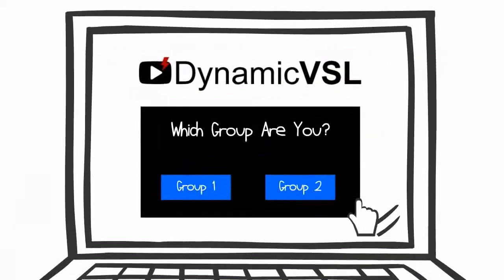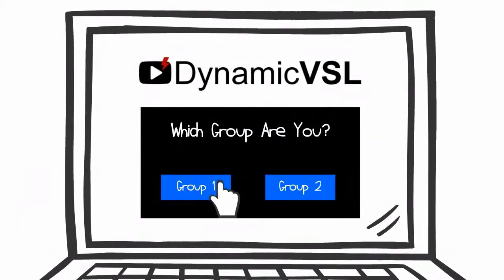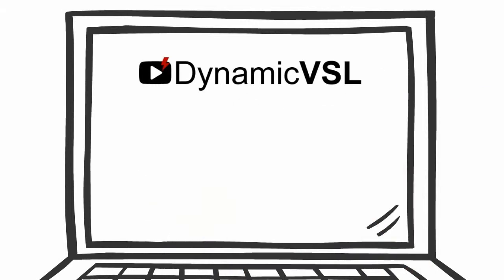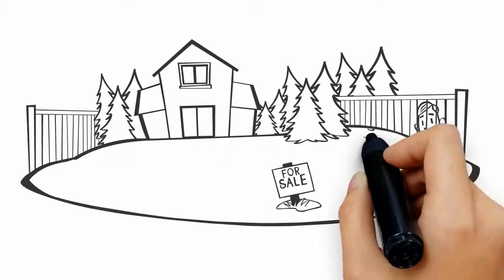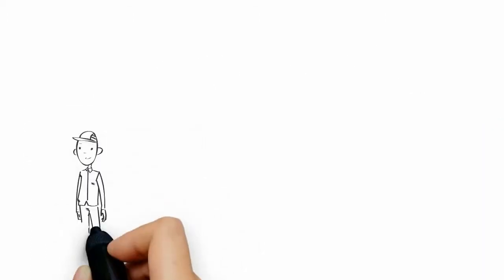Dynamic VSL asks your audience questions right inside your sales video. Then it delivers a custom sales message to each person on the spot based on their answers, just like a real salesman does.